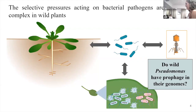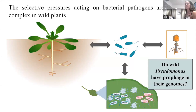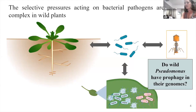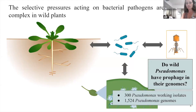The current understanding in the plant field is that phages exist in the plant, but we don't have very good taxonomic assignment or characterization of these phages. What we know is that if they're present, the bacterial community shifts. So there's a large potential for research in this field. We wondered: do the wild Pseudomonas strains that we have in the lab have prophages in their genomes?